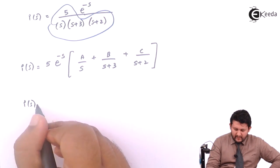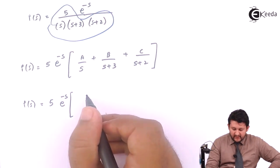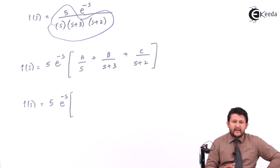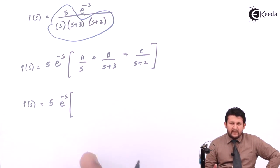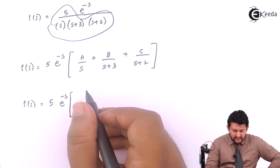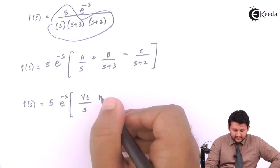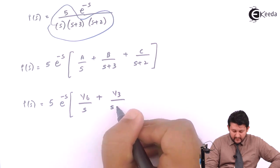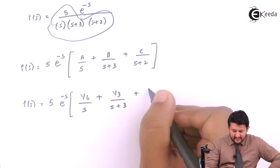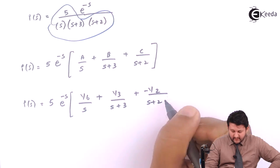So after applying partial, which assuming you already guys know it, you have practiced in earlier type 6 and also in M3, so I am putting the value directly. In this case you get the value A as 1 upon 6, the value of B as 1 upon 3, the value of C as minus 1 upon 2.